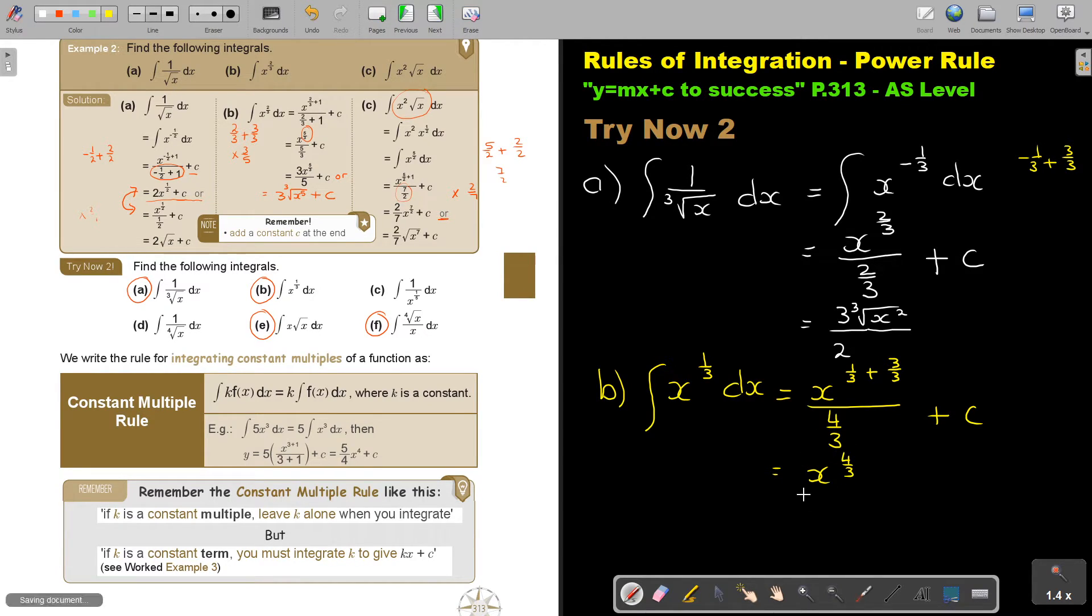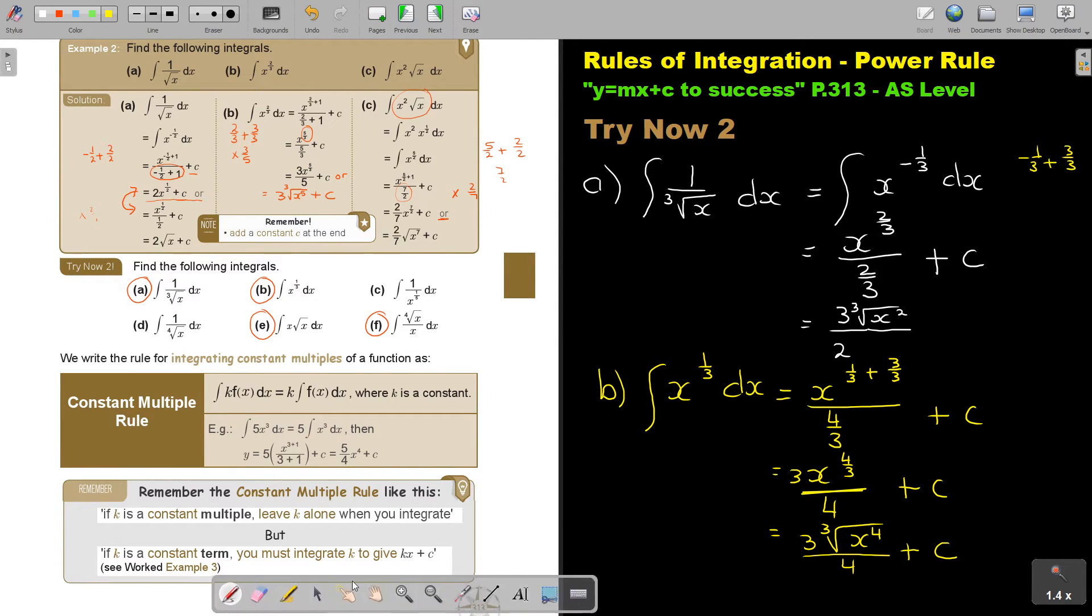And if I multiply by the reciprocal, it's going to be 3, and there's going to be the 4 plus c. But I can also write it as 3. I can put it in. There's my x. It's a cube root. There's the 4, there's the 4, there's the 4 plus c. And that will be my final answer.